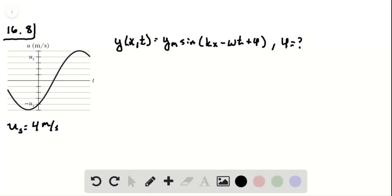16.8. So we have a plot of the transverse velocity versus time at x equals 0 on a string. That obviously has a wave going on it. The scale of this is set by 4 meters per second.